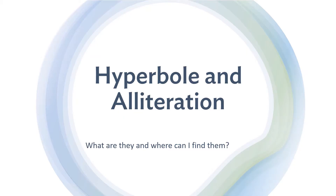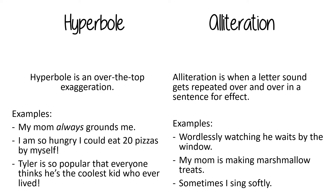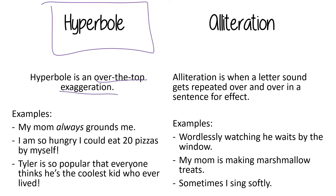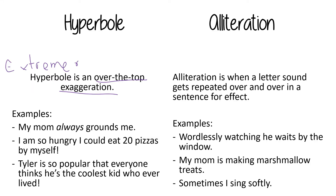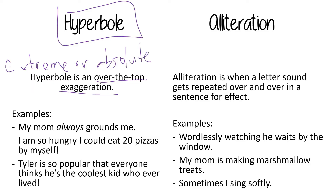So what are hyperbole and alliteration and where can I find them? Well, hyperbole is an over-the-top exaggeration. I'm going to box that word in. When we're saying over-the-top exaggeration, you might be thinking, well, that sounds a lot like extreme or absolute language — and you would be totally right. Extreme or absolute language.